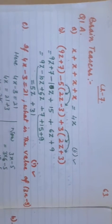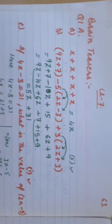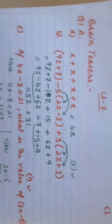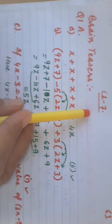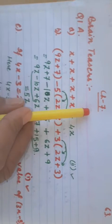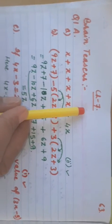Good morning students. Today we are going to discuss brain teasers of chapter number 7, that is linear equation in one variable.